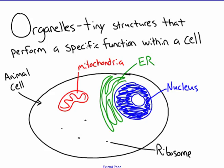We have a nucleus that contains the DNA, ribosomes that make protein, mitochondria that make energy, ER that folds and packages proteins, and a cell membrane. So we have a bunch of organelles that perform specific functions, and we're going to talk about each of these today.